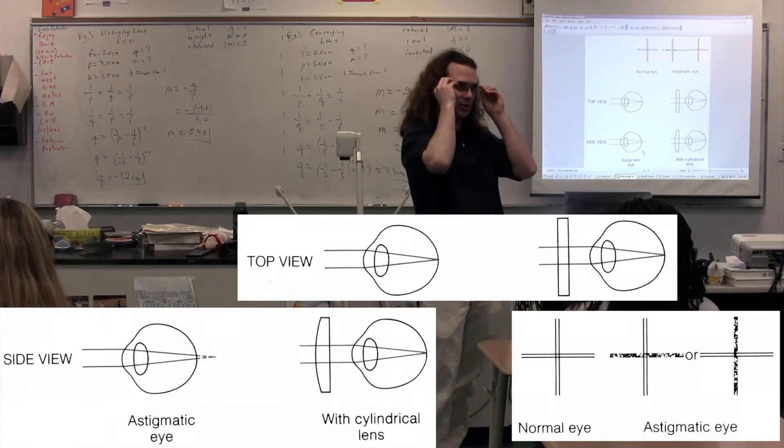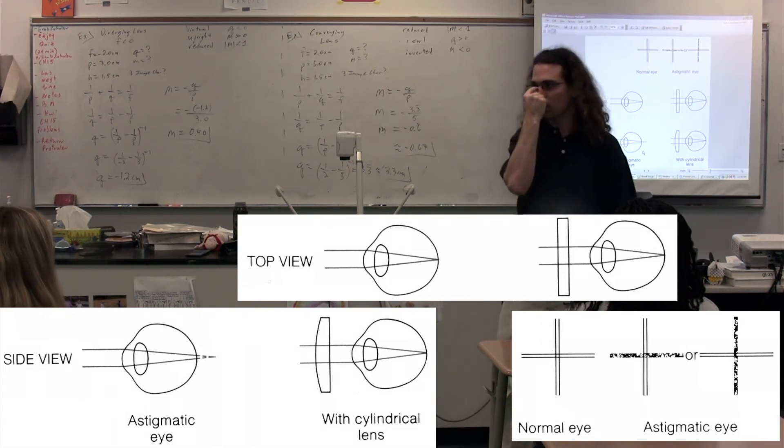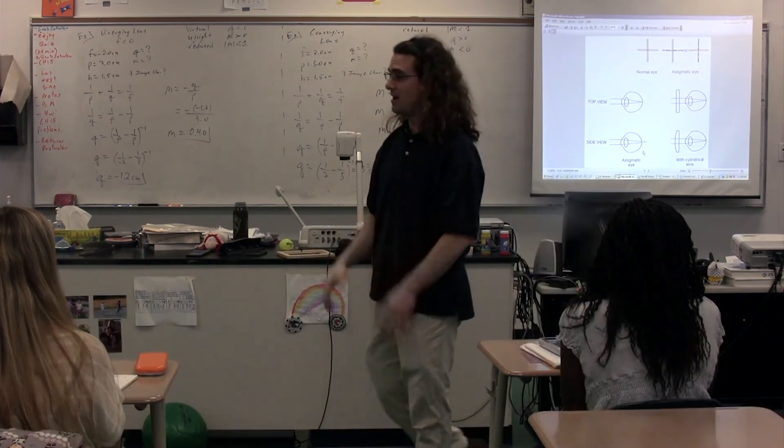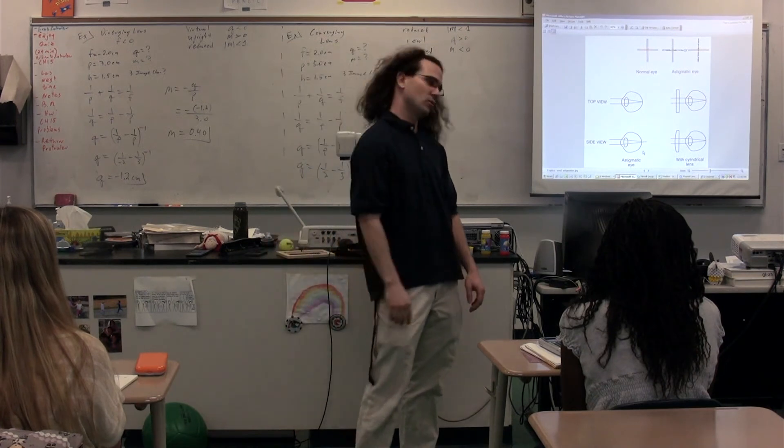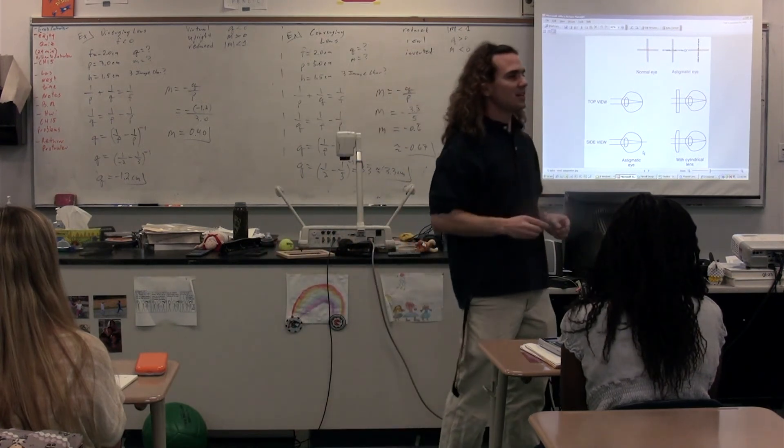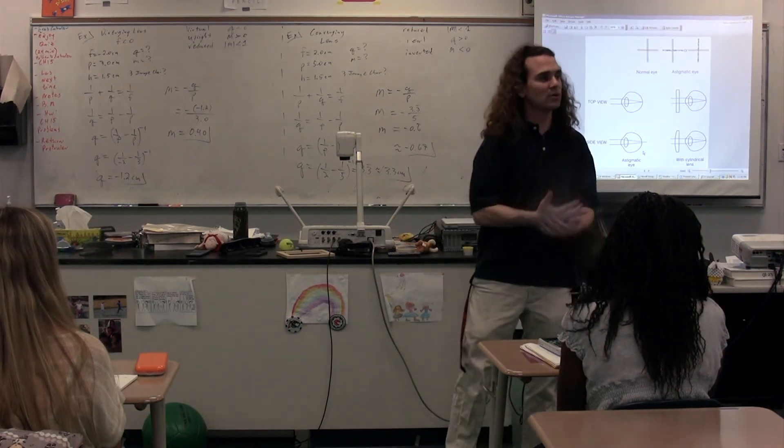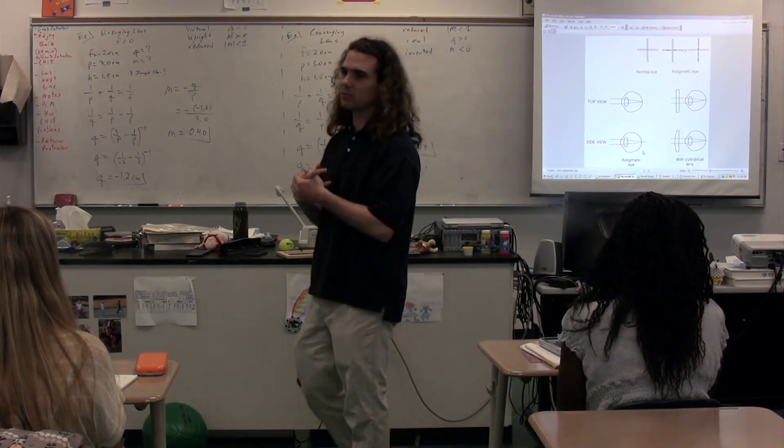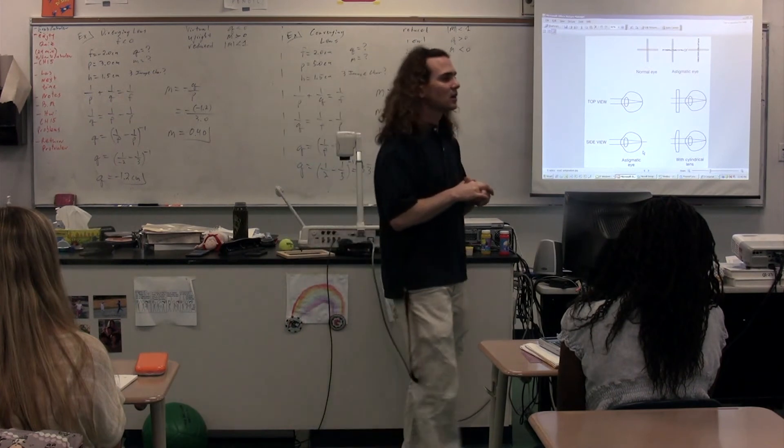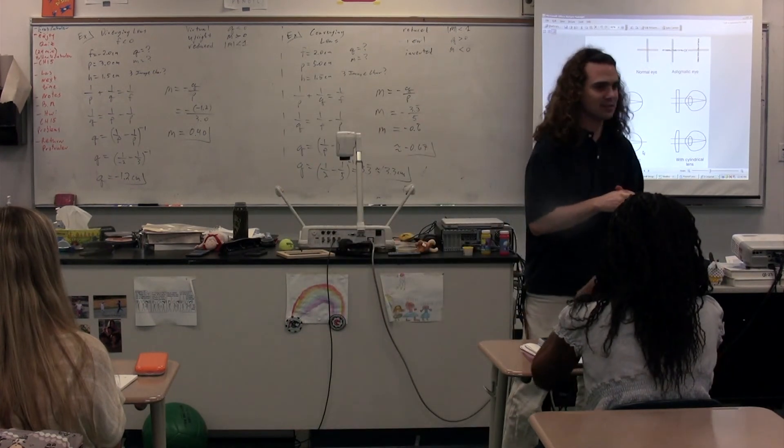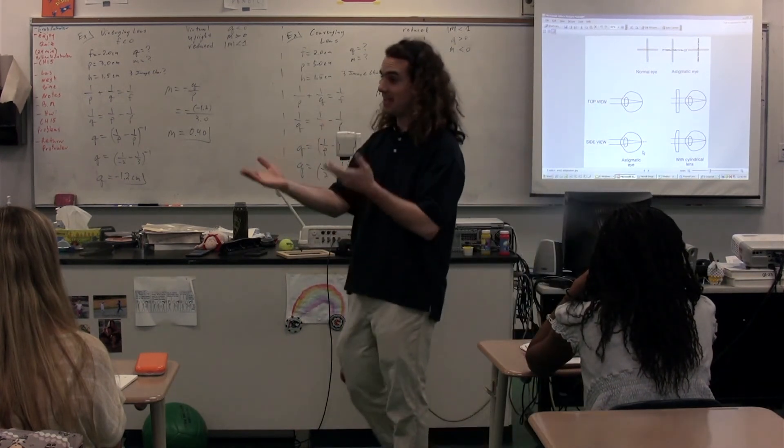So what they have to do is they have to create glasses where the focal length is different on one plane than it is on another, which is fine for glasses because glasses move with your head. But it's an issue with contacts because contacts actually move around. And it wasn't until probably the last five years or something like that where we were actually able to have contacts where you have an astigmatism. Anybody have astigmatism and have contacts?